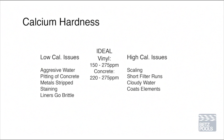Calcium hardness is quite often overlooked as it doesn't act as a major factor in bather comfort. It can, however, have a major impact on the pool surface and equipment. Calcium hardness is the quantity of dissolved calcium in the water. The ideal range for a concrete pool is 225 to 275 ppm, and a vinyl pool is 150 to 275 ppm. Effects of low calcium hardness are aggressive water, pitting of concrete, staining, and liners going brittle. Effects of high calcium are cloudy water, scaling on the pool surface, and shorter filter runs as the sand in the filter starts to get calcified.